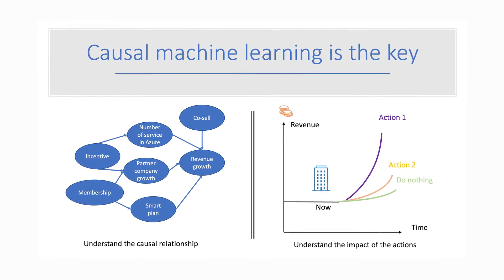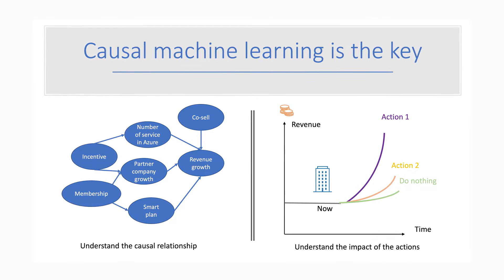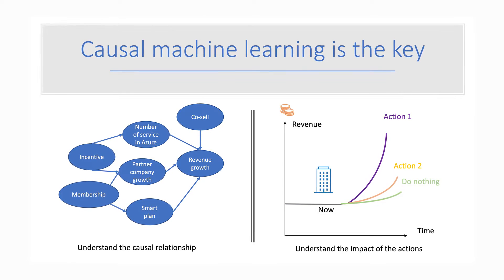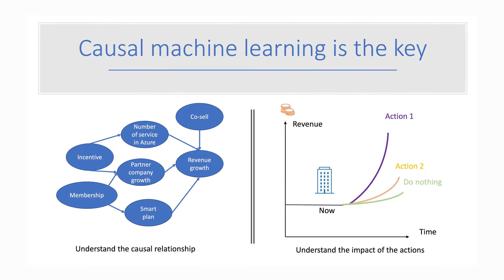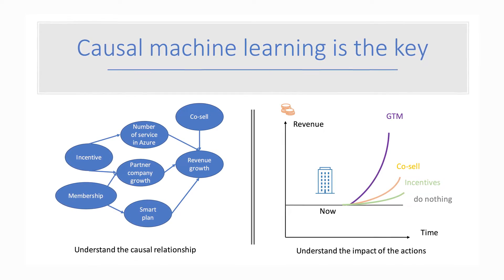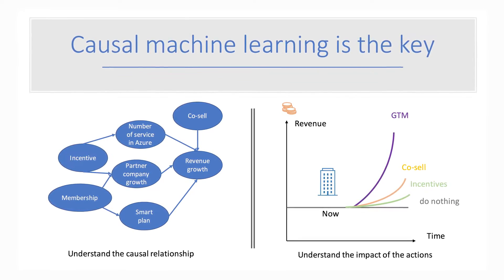To answer such questions, we need to understand two things. One is the relationship between different variables — for example, if we give a membership offer, will this increase the number of services on our Azure cloud, and will this drive revenue afterwards? So we want to understand the causal relationship. Another thing we need to understand is the consequence of the action.